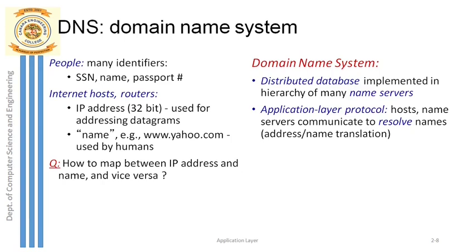The main functionality of DNS is giving the IP address. For DNS to give the IP address, it requires input from the user's side. We as users can remember the hostname — the website address like www.yahoo.com — so we give that hostname as input to DNS. DNS then converts that hostname into a 32-bit IP address, and once the browser gets that IP address, it can easily contact the server.